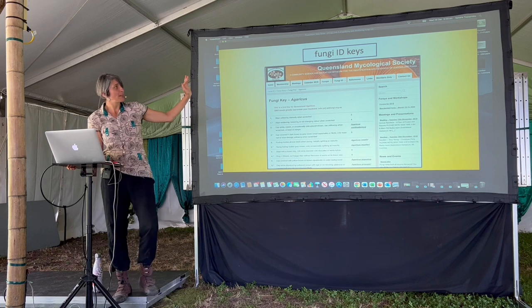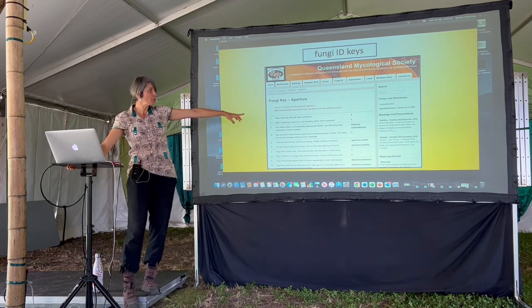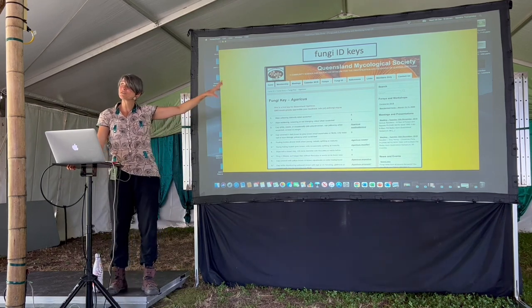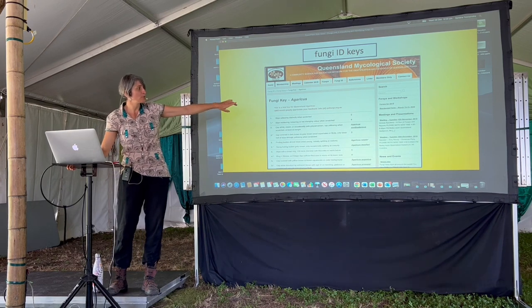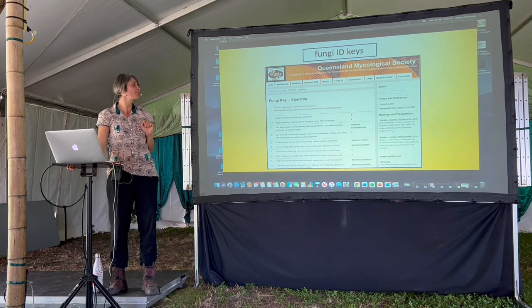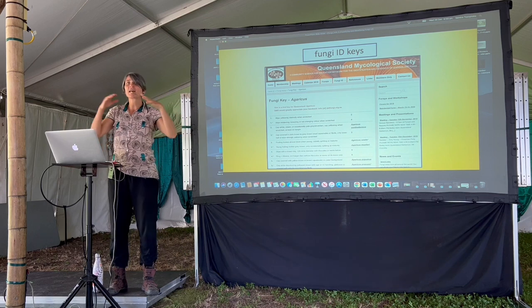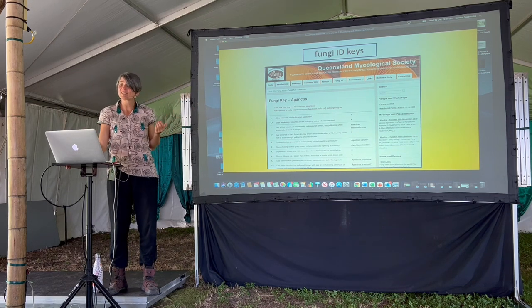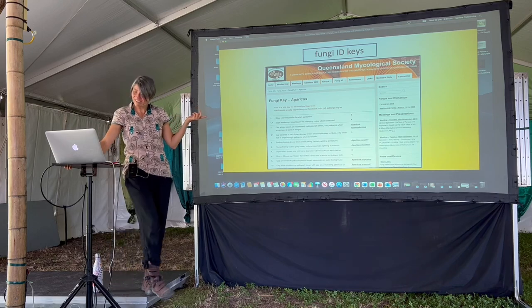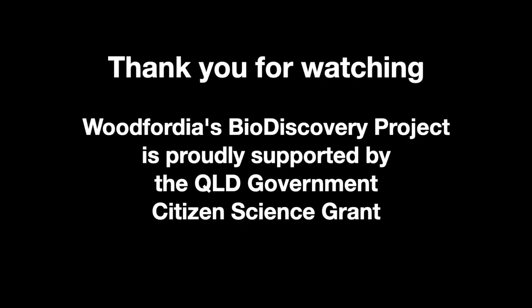To identify fungi, you can go to the Queensland Mycological Society and work through the keys using all those features we talked about. That's just for agarics — and agaricus generally refers to a mushroom with gills. There's actually an Agaricus genus as well, so it's a bit like the word mushroom in that way.